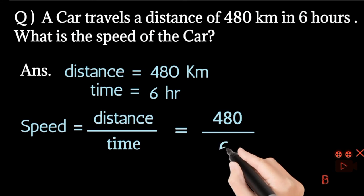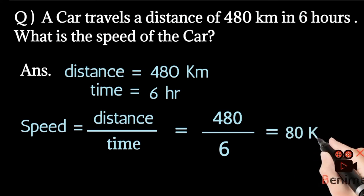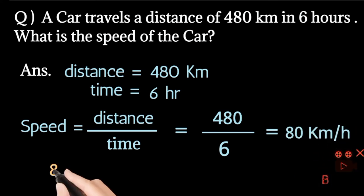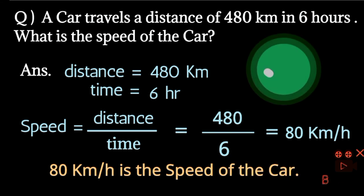So 480 km को 6 hours से divide करेंगे. 80 km per hour is the speed of the car. Car की speed कितनी हो गई? 80 km per hour. I hope speed की concept clear हो गई. Right?